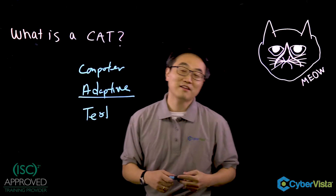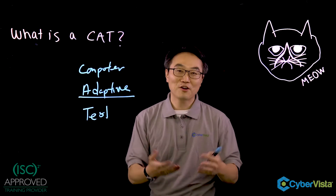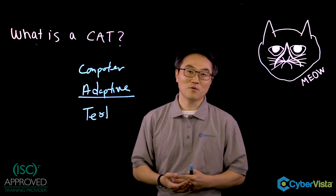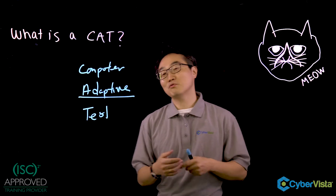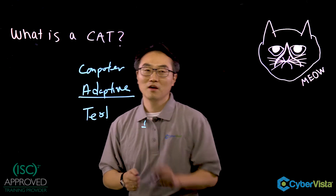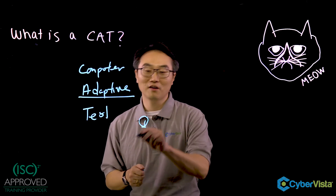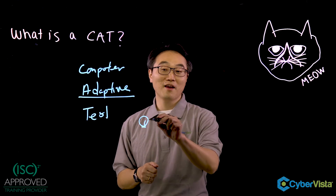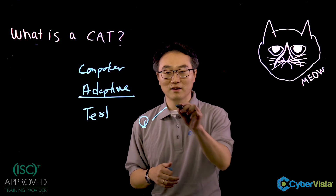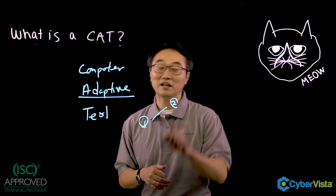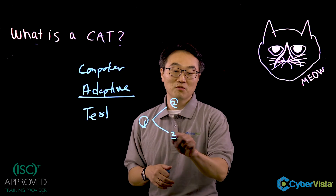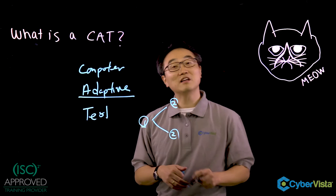The test actually looks at how you're doing every time you answer a question. As you're going through a test, let's say you've got question one. Every time you answer a question, if you get it right, it's going to say this person got this question right — let's throw in a second question that's slightly harder. And if you got that question wrong, the second question would be slightly easier.